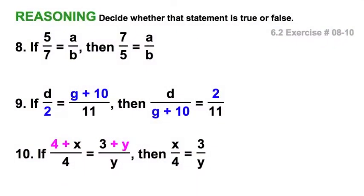Let's just decide if these statements are true. Start with 8: if 5 is to 7 as a is to b, then 7 is to 5 as a is to b. That's going to get a big false. And the problem there is you're taking the reciprocal of only one. We're doing is taking the reciprocal of one of the two ratios, not both. So that's not going to work out. I don't like that.